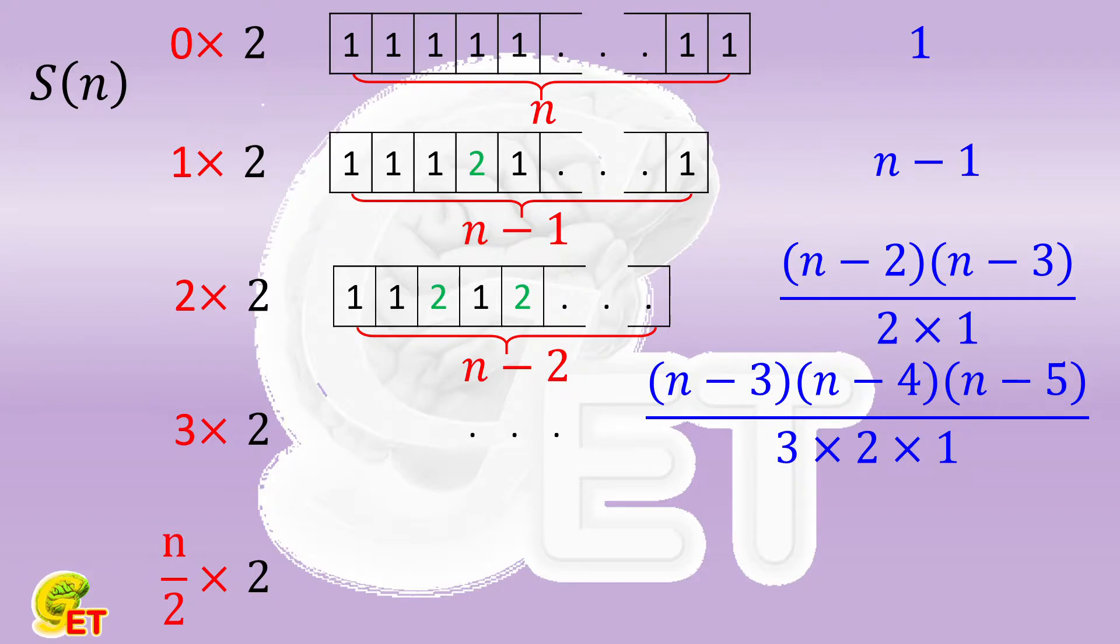Then there are maximal half n digits that can be 2, and there is only one such case. If we calculate according to the aforementioned formula, it is n minus half n times n minus half n minus 1, all the way until 1, divided by half n times half n minus 1, also all the way till 1.